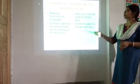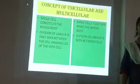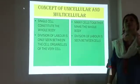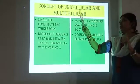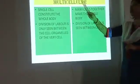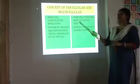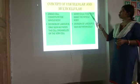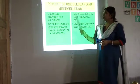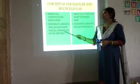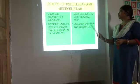The next part of today's lesson is the concept of unicellular and multicellular organisms. 'Uni' means one — when an organism is made up of a single cell, it is called a unicellular organism. When an organism is made up of more than one cell, it is called a multicellular organism. Another feature: in unicellular organisms, division of labor occurs only between the organelles within that single cell, whereas in multicellular organisms, division of labor is seen between the cells.